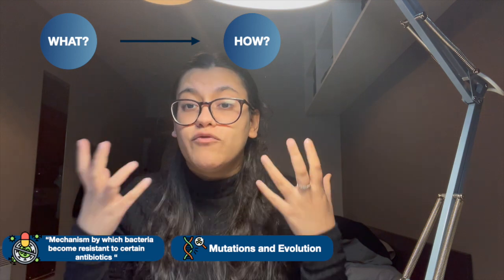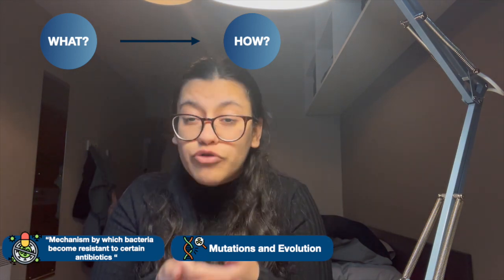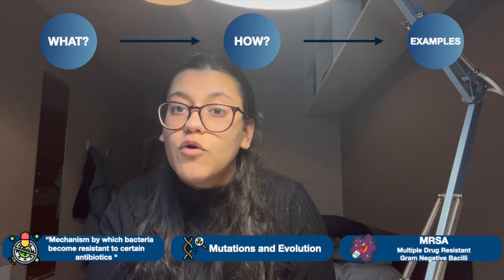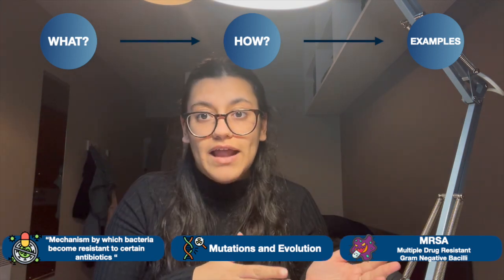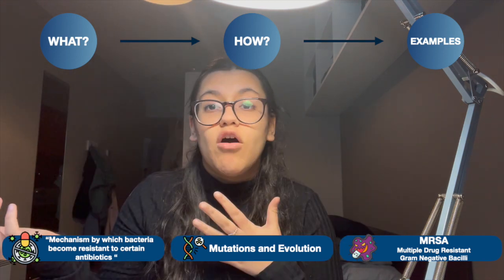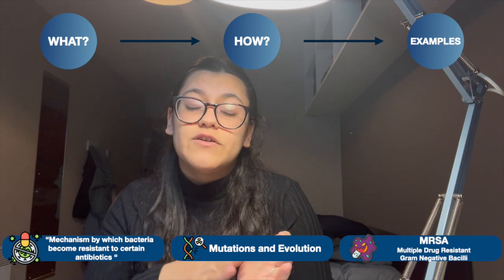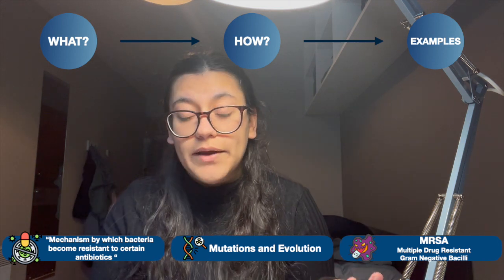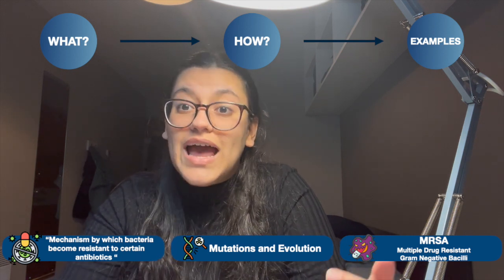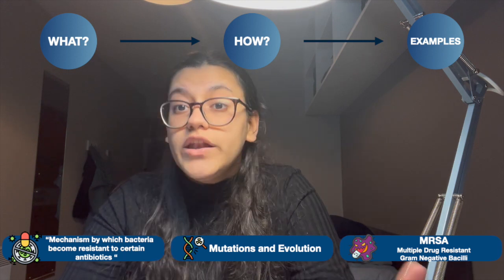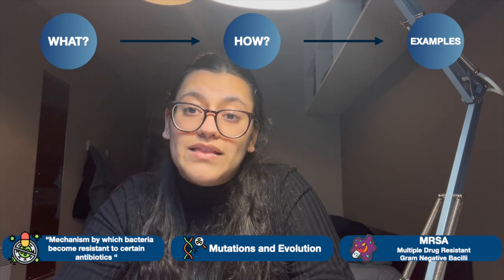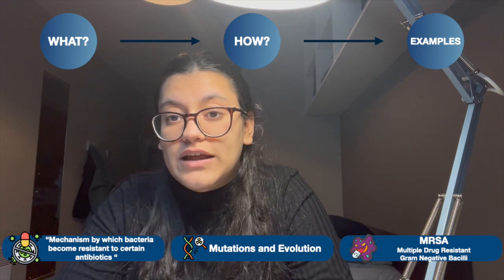This is an increasingly common phenomenon, making many antibiotics virtually useless. An example is MRSA — methicillin-resistant Staphylococcus aureus — which has led to the emergence of multiple drug-resistant gram-negative bacilli. Interestingly, when Fleming was awarded his Nobel Prize, he predicted antibiotic resistance, warning that people might underdose themselves and inadvertently create resistant bacteria.